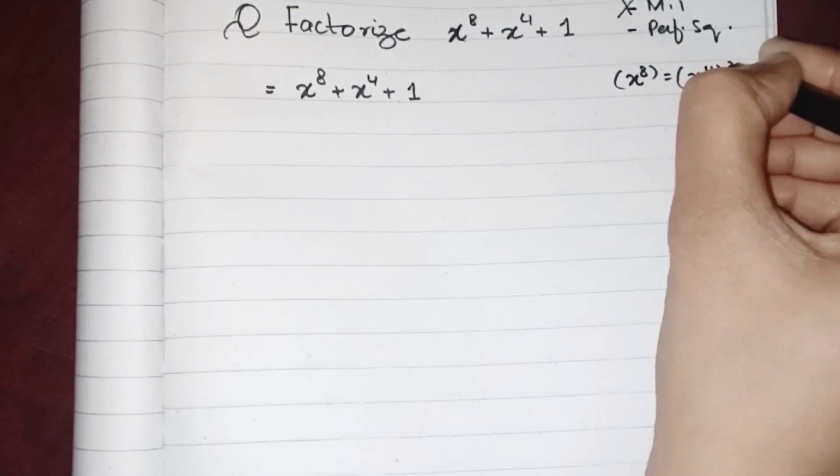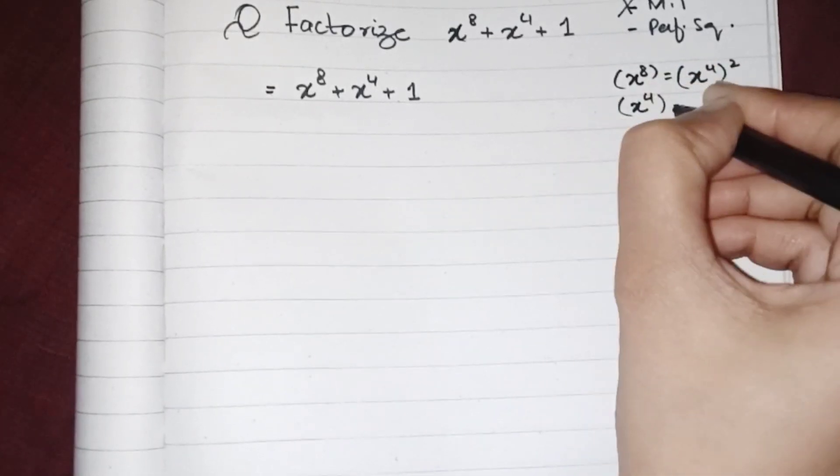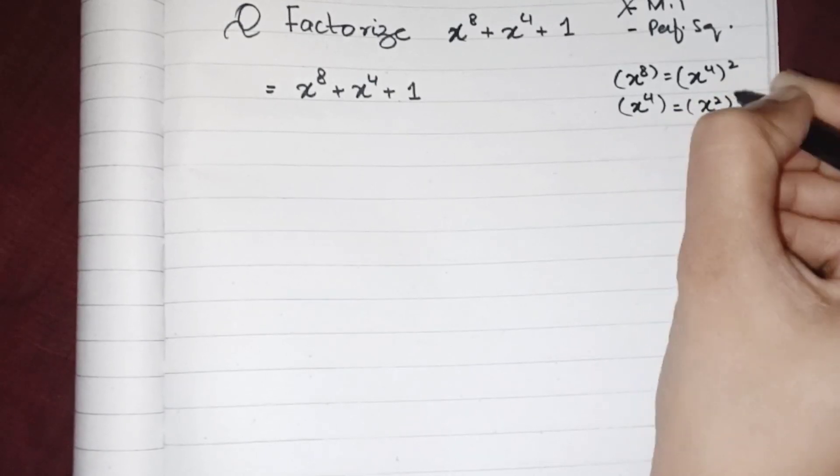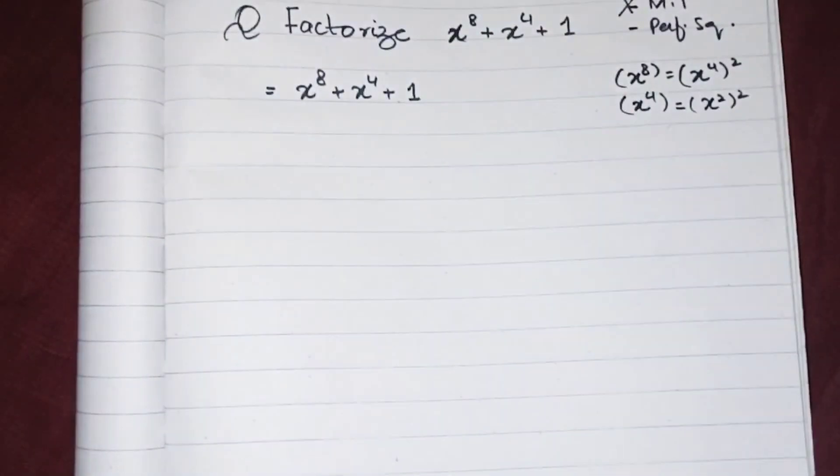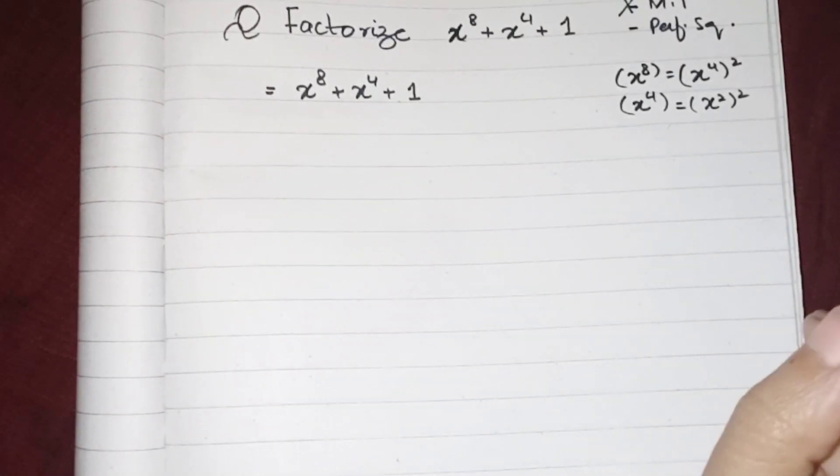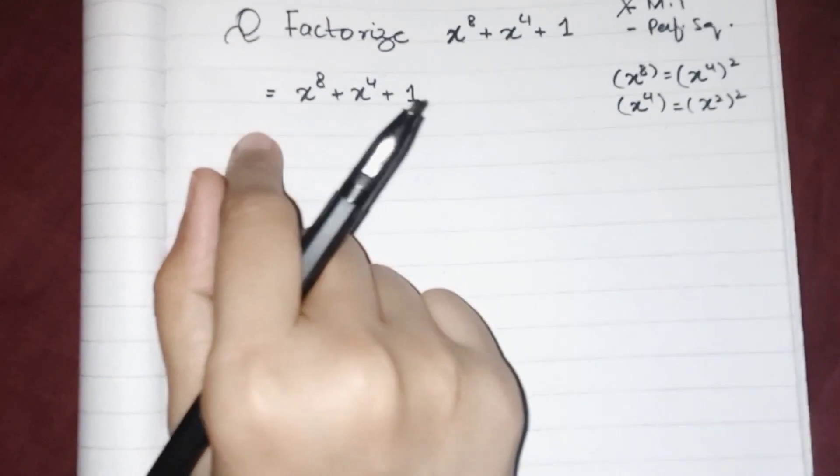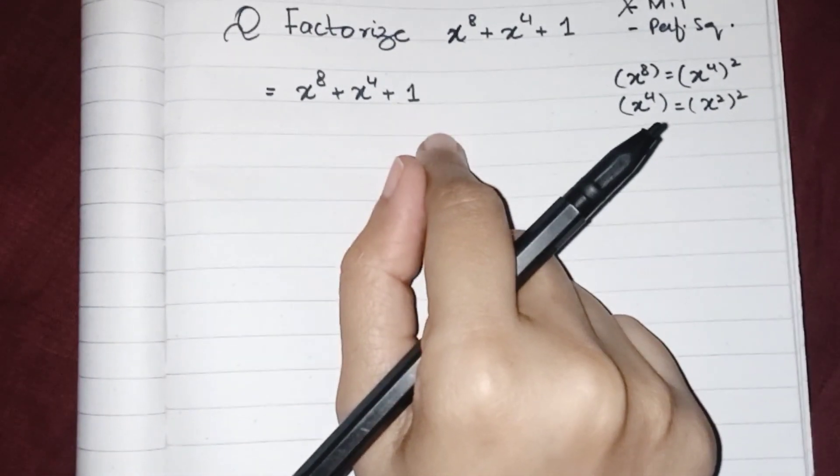So which two numbers will we choose to make it a perfect square? As we know, we want a middle term as 2ab to make a perfect square formula. We must want a term having x along with there, so we can choose one x term and one constant term.